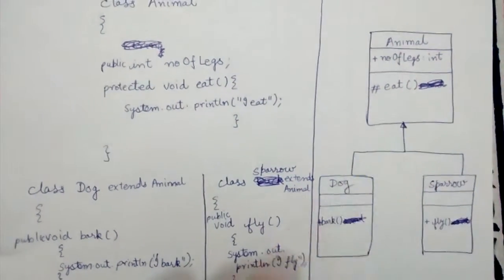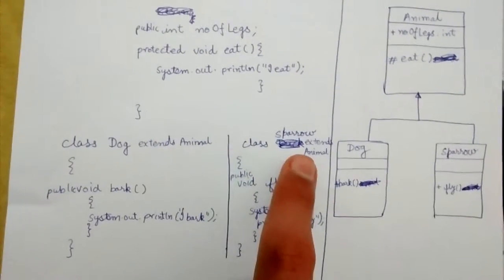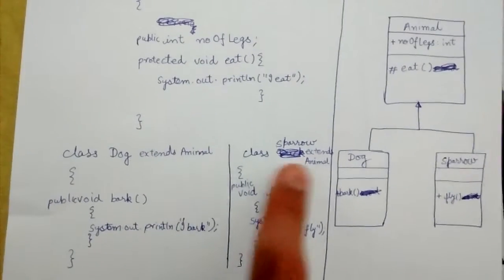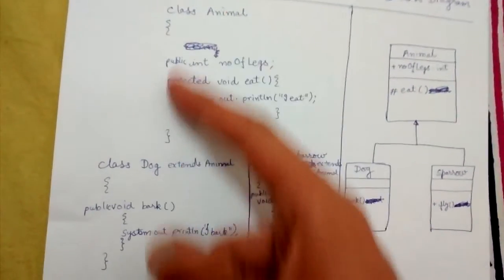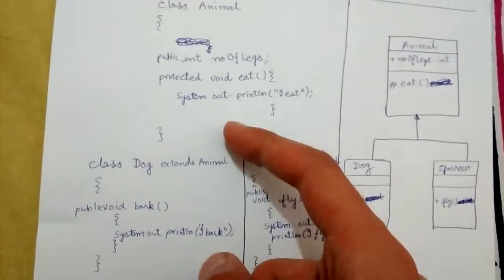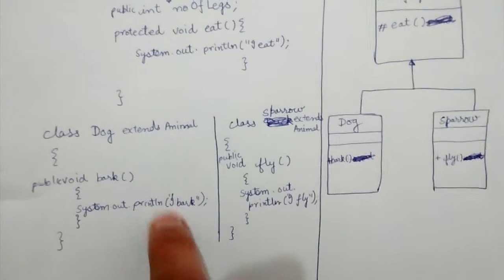Here are two classes extending Animal - these are its subclasses. They will inherit all the properties and methods defined by Animal, and they are free to add their own properties and methods as well.